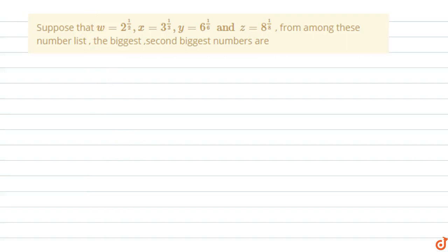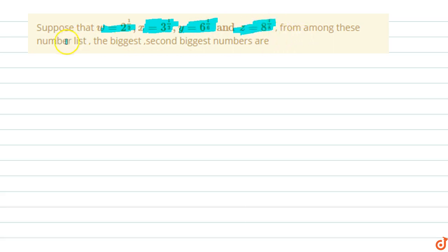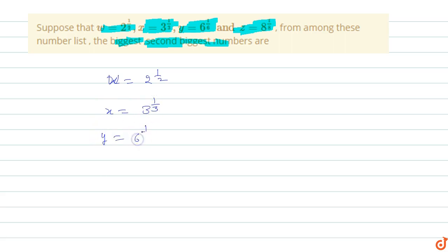In this question, suppose that w equals 2 power 1/2, x equals 3 power 1/3, y equals 6 power 1/6, and z equals 8 power 1/8. From among these numbers, we need to find the biggest and the second biggest number.